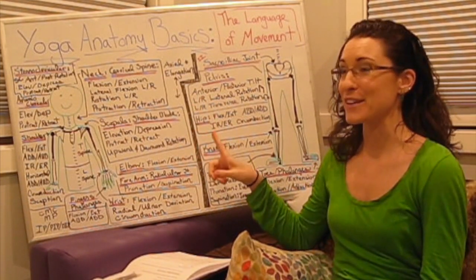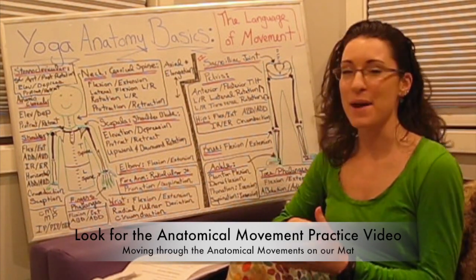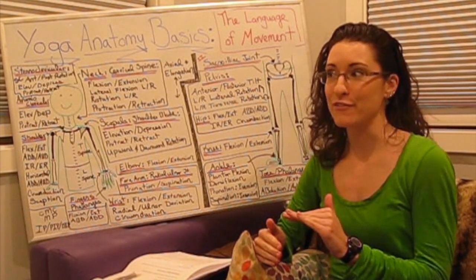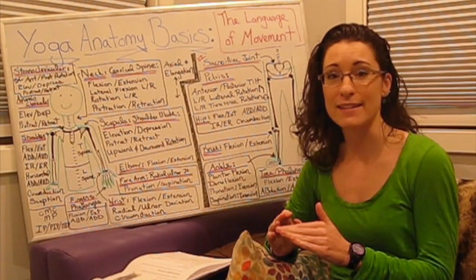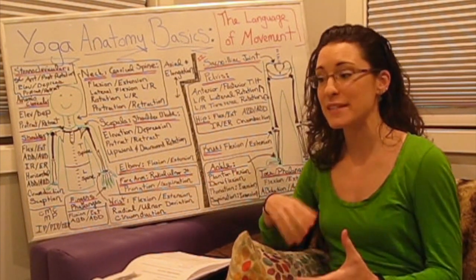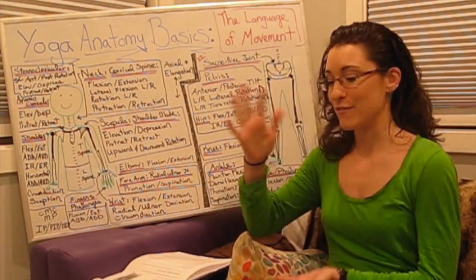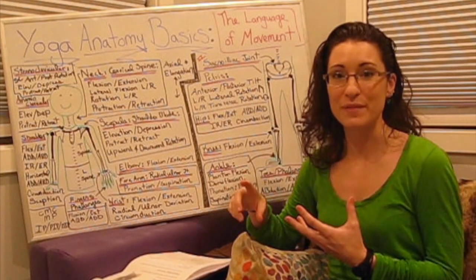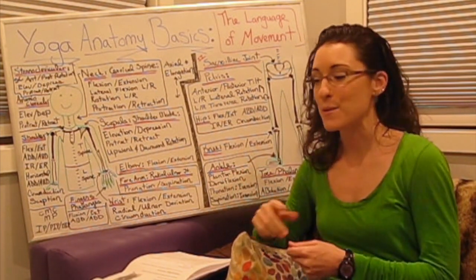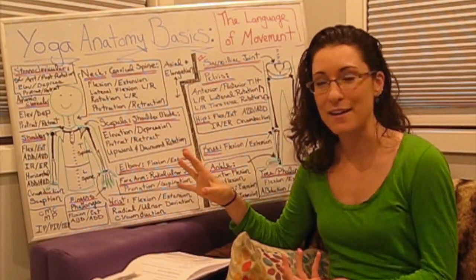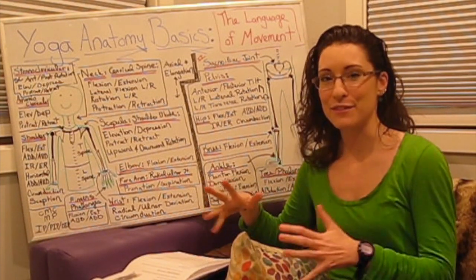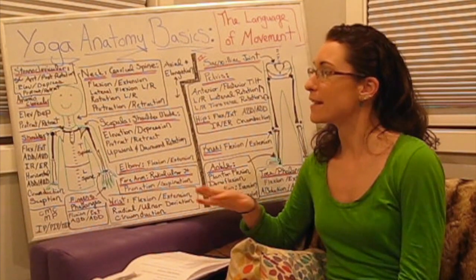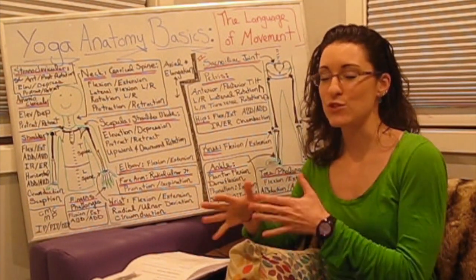We start out from this very simplified version — I know it probably doesn't look like a simplified version. But when we go through these movements, we're talking about pure movements. What I mean by that is we're isolating a single direction of movement. We hardly ever do a movement at one joint in one plane completely isolated. The movements we do in yoga are rather complicated and involve a very complex combination of any of these movements in just one single pose at every single joint in the body.